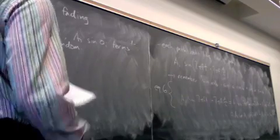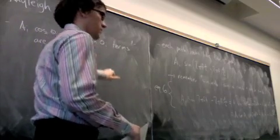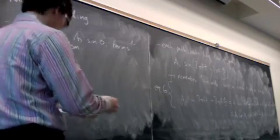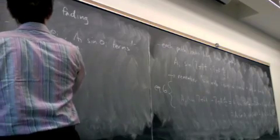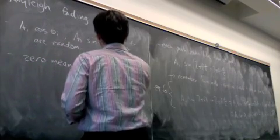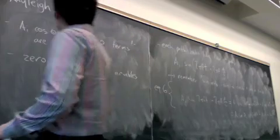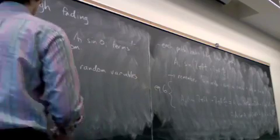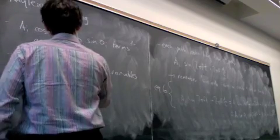These terms are random. Now cosine goes from minus one to one, and sine goes from minus one to one, and the distribution of the distances can be arbitrary. So we can assume that these are zero-mean random variables. Furthermore, in the Rayleigh scattering model, we assume that there's no dominant path, so the variances are roughly the same.